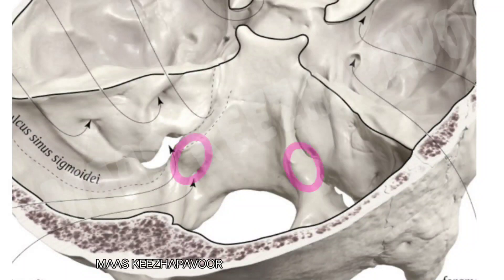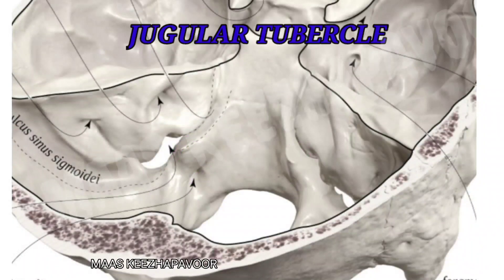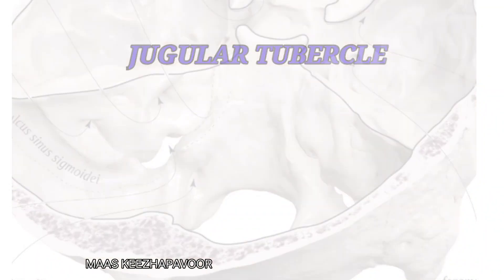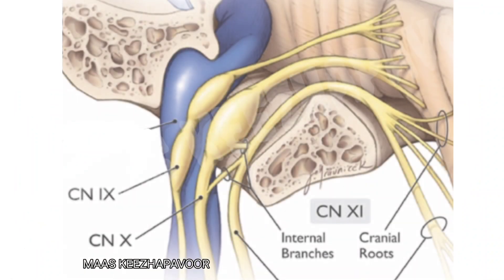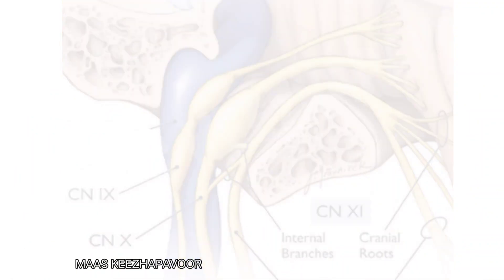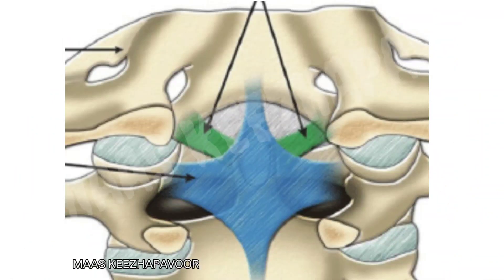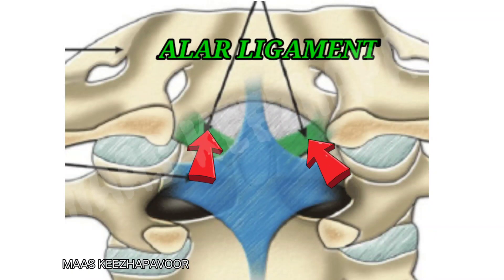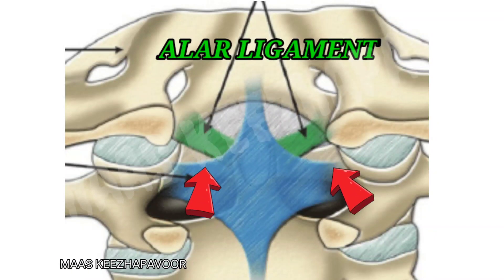The superior surface of the condylar part presents a grooved smooth elevation called the jugular tubercle. It is grooved by the 9th, 10th, and 11th cranial nerves. The medial surface of the occipital condyle gives attachment to the alar ligament.